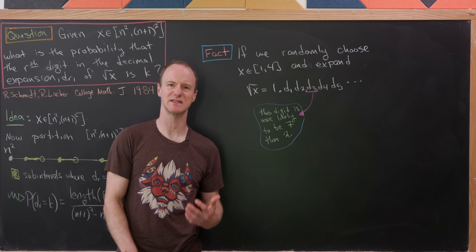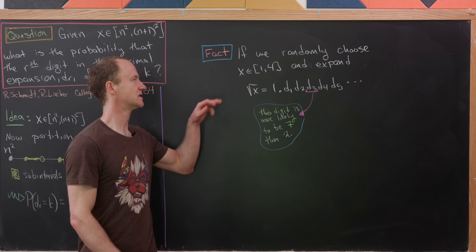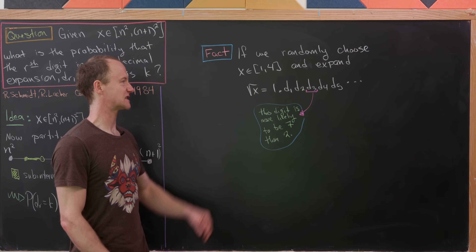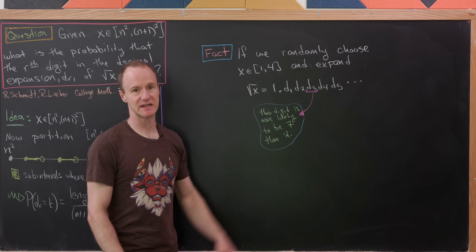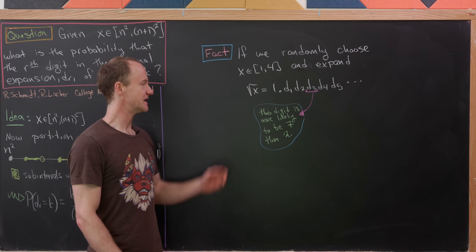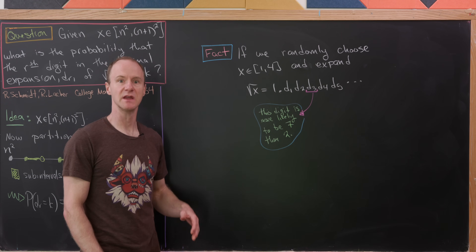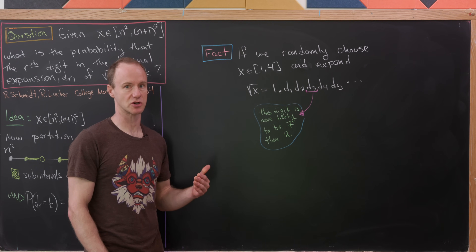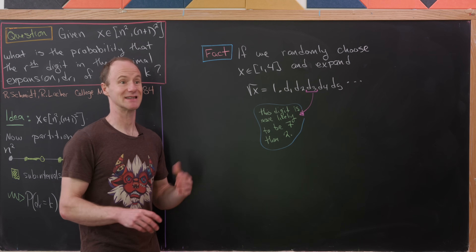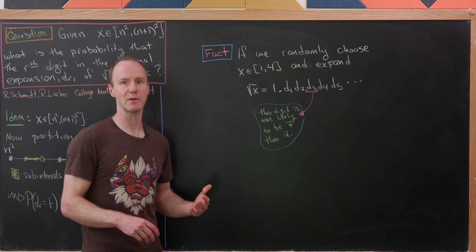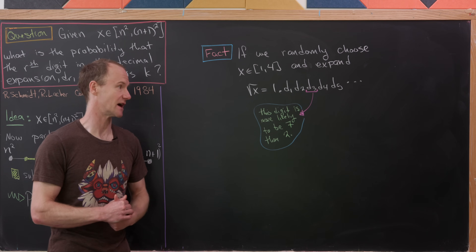Let's start with a fact that doesn't sit very well: if we randomly choose a number x between 1 and 4, and then expand the square root of x in its decimal expansion and look at the third decimal digit, this digit happens to be more likely to be 7 than 2. In fact, as the digit value gets larger, the likelihood increases — so it's least likely to be 0, and most likely to be 9.